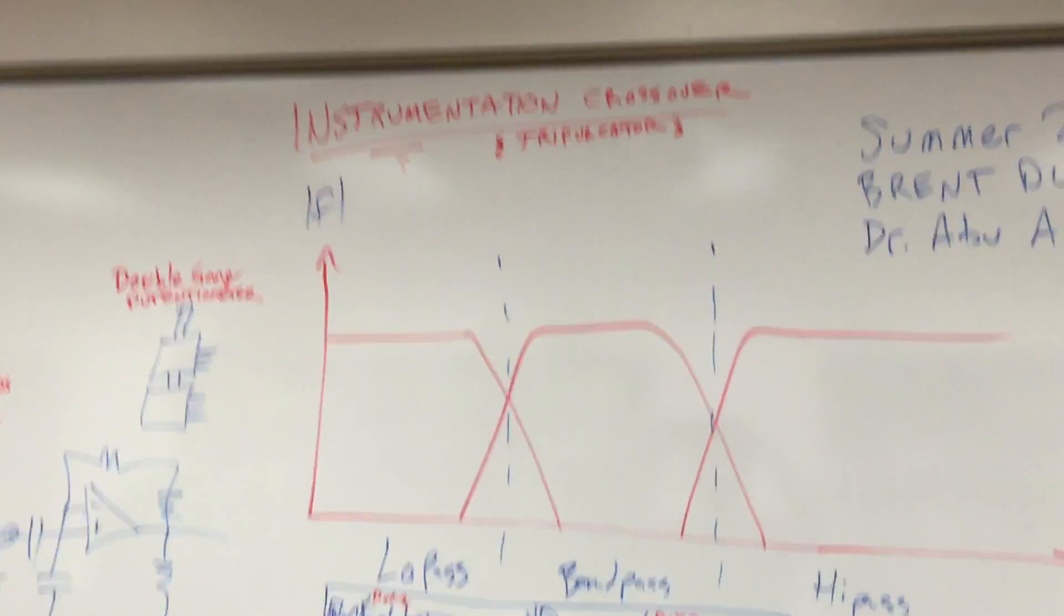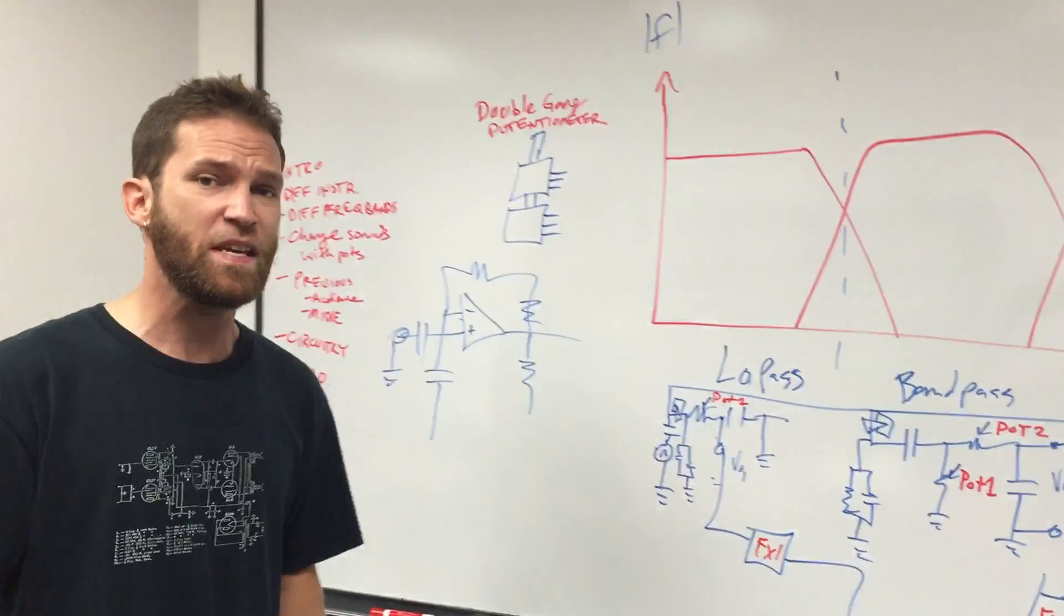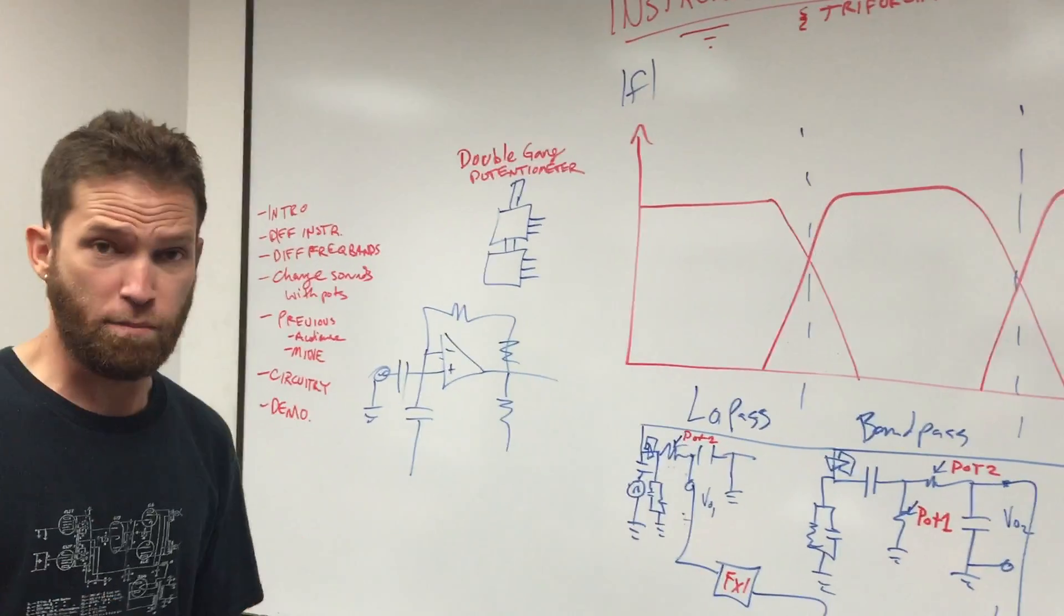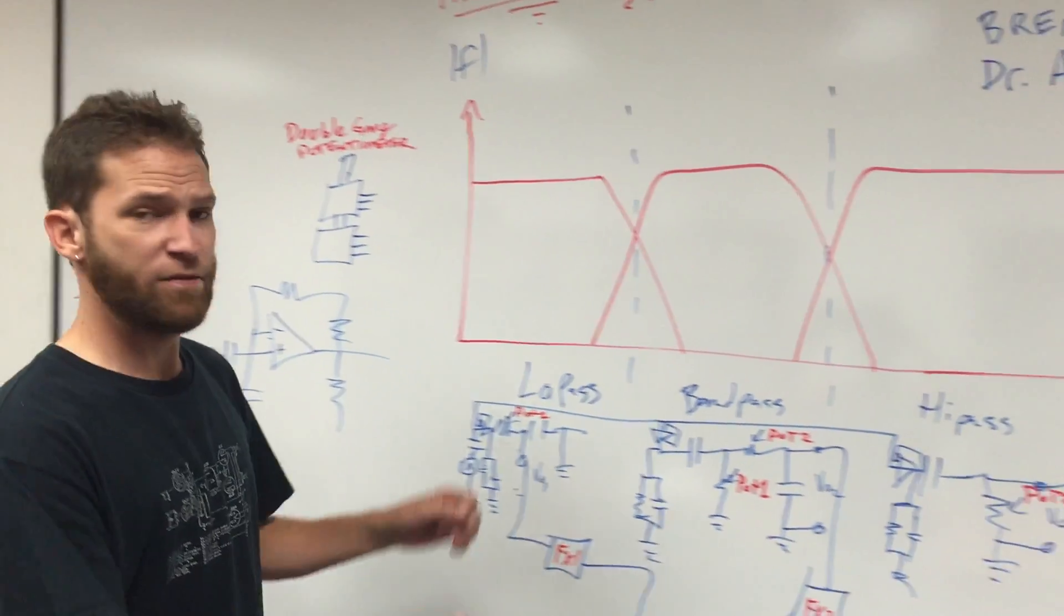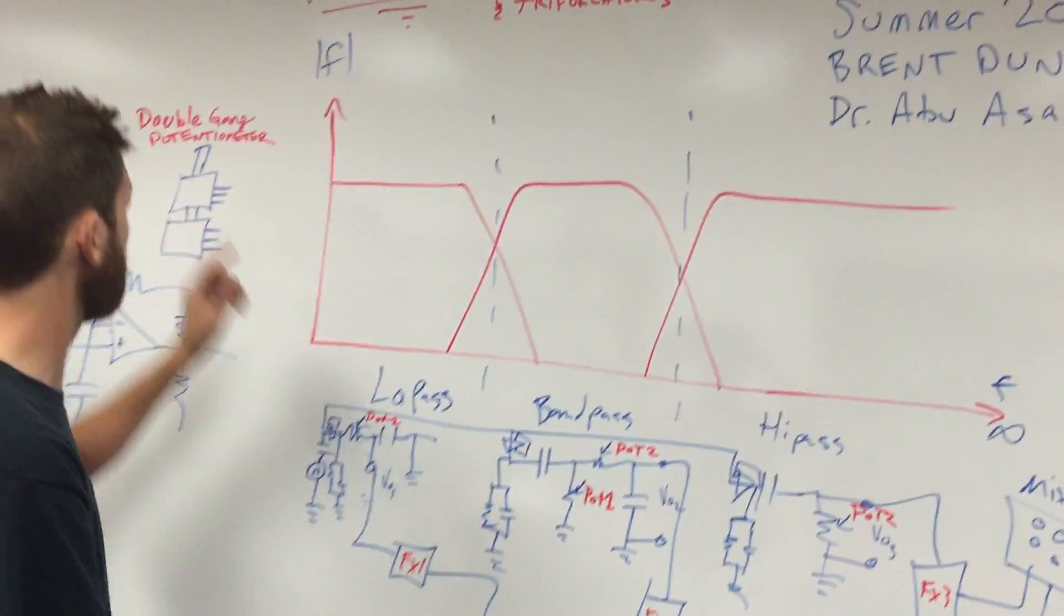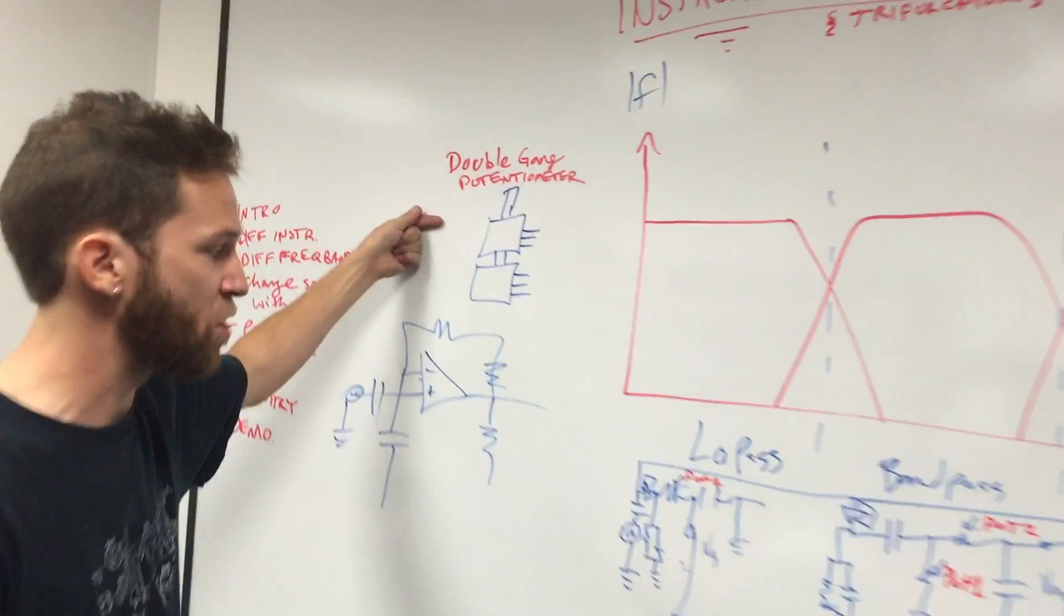The primary purpose for this device is to give the instrumentalist more control over their sound output. The idea is that we have two adjustable or three adjustable frequency bands adjusted with two double gang potentiometers.